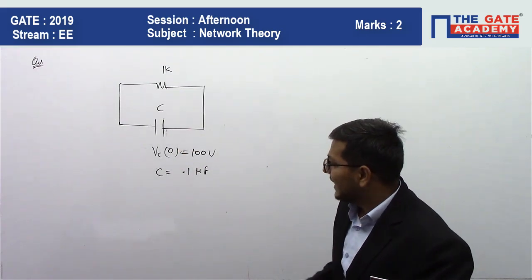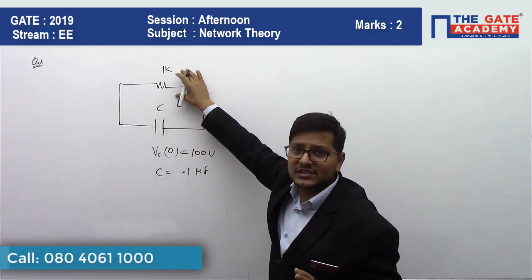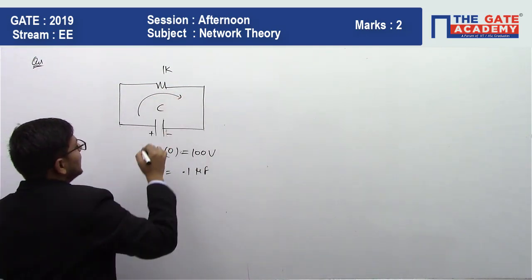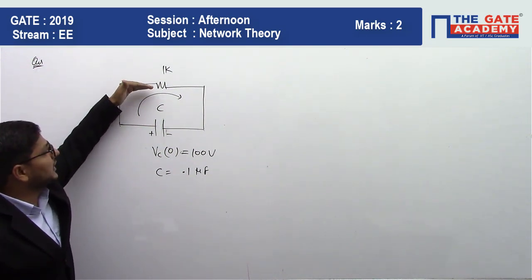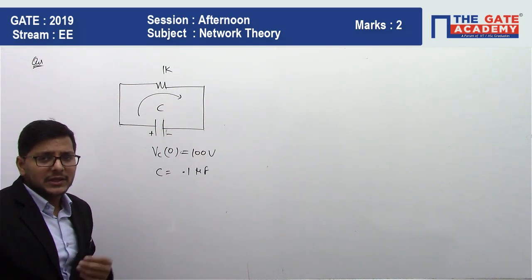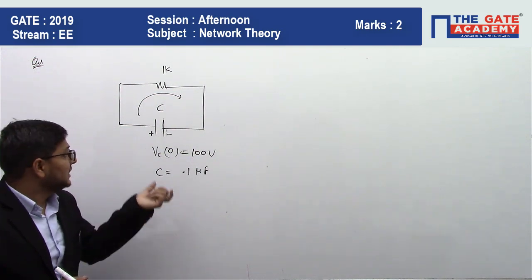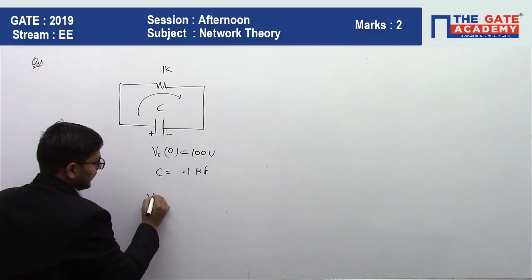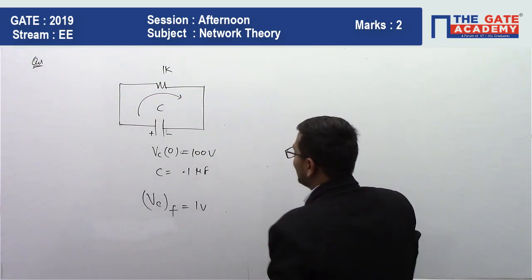Initially the capacitor is charged to 100 volts. As soon as we connect it across the resistance, the capacitor starts discharging. All the power will be dissipated across the resistor, and the capacitor voltage will decrease gradually. We are asked: at what time does the capacitor voltage become 1 volt?